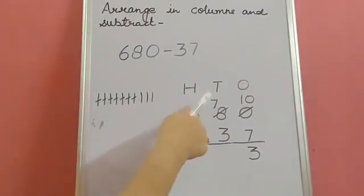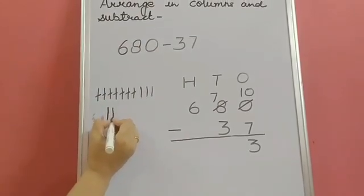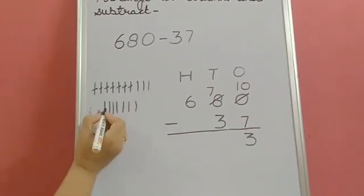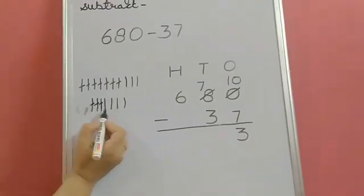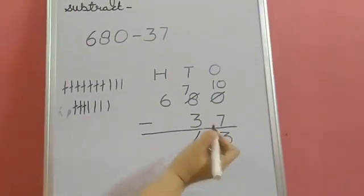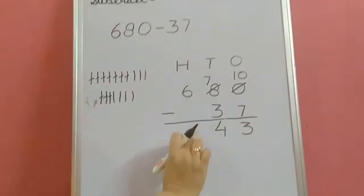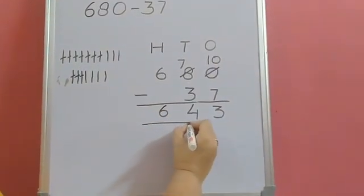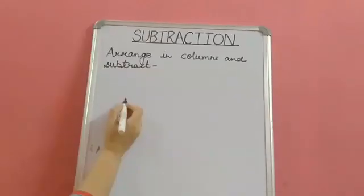From the tens column, 7 tens minus 3 tens. So 7 lines. 1, 2, 3, 4, 5, 6 and 7. And how many we have to subtract? 3. So we will cross 3 lines. 1, 2 and 3. How many are left? 1, 2, 3, 4. So 4 tens. Now from the hundreds column, from 6 we don't have to subtract anything, so we will copy down 6 as such. So the difference between 680 and 37 is 643.